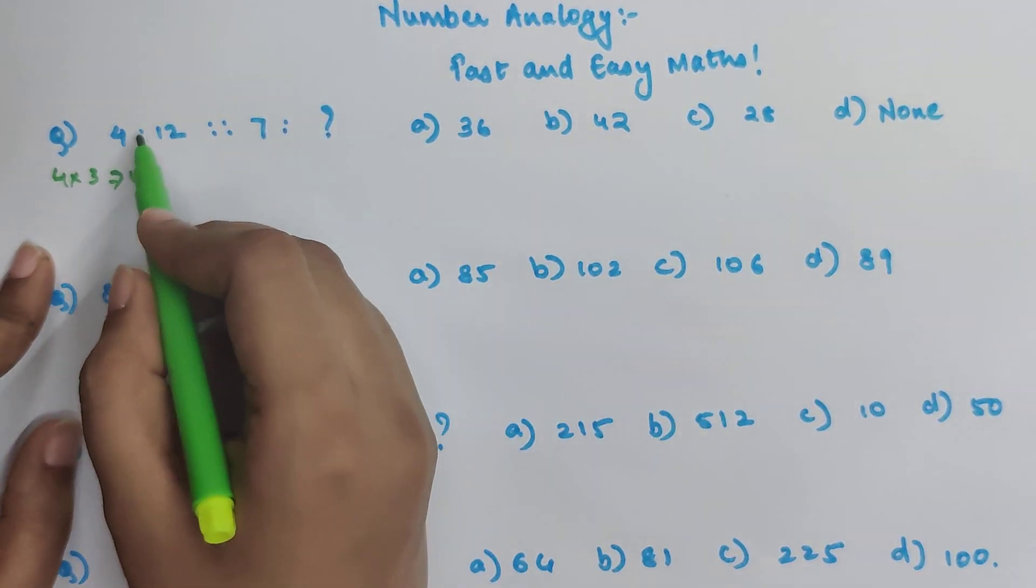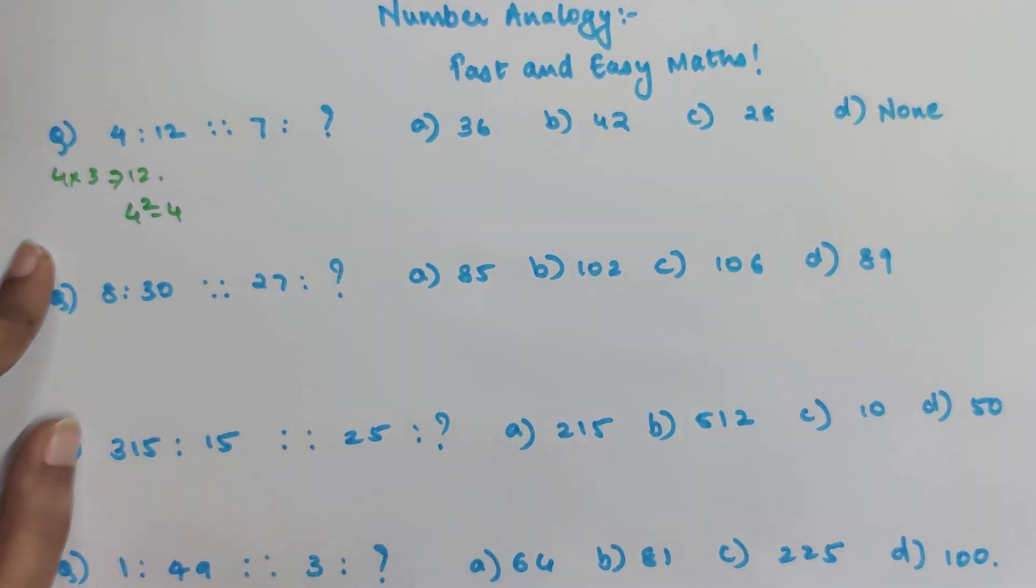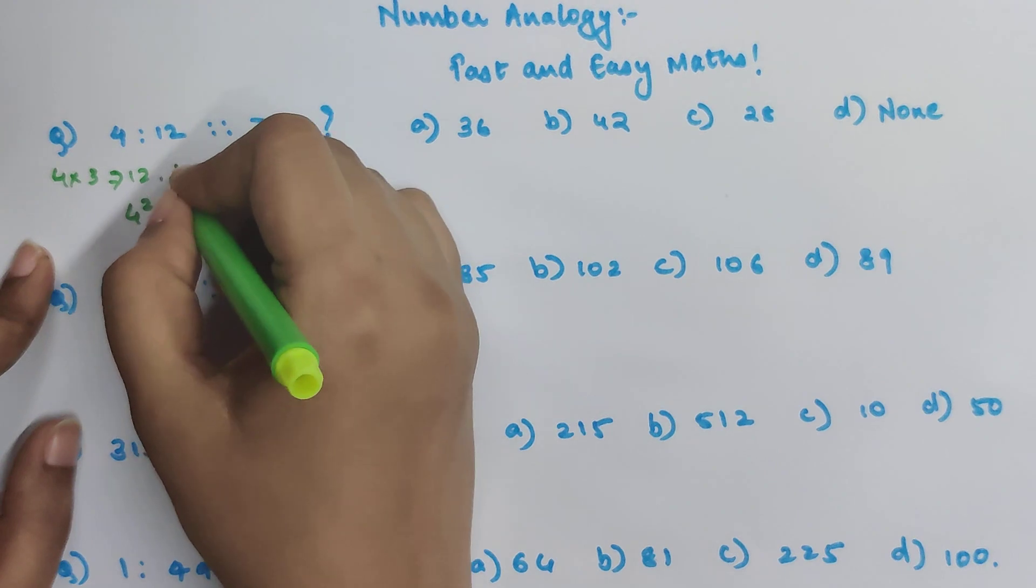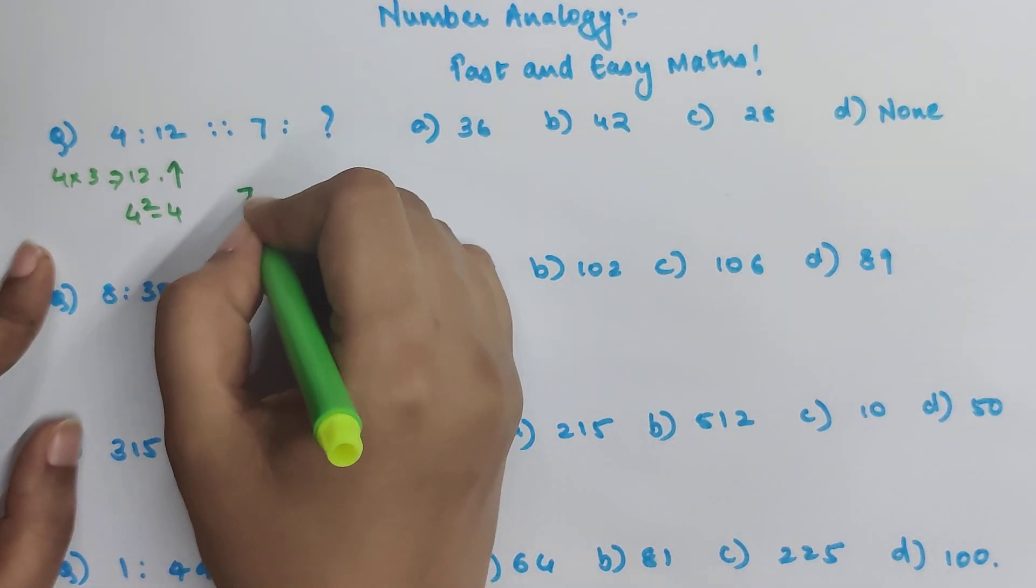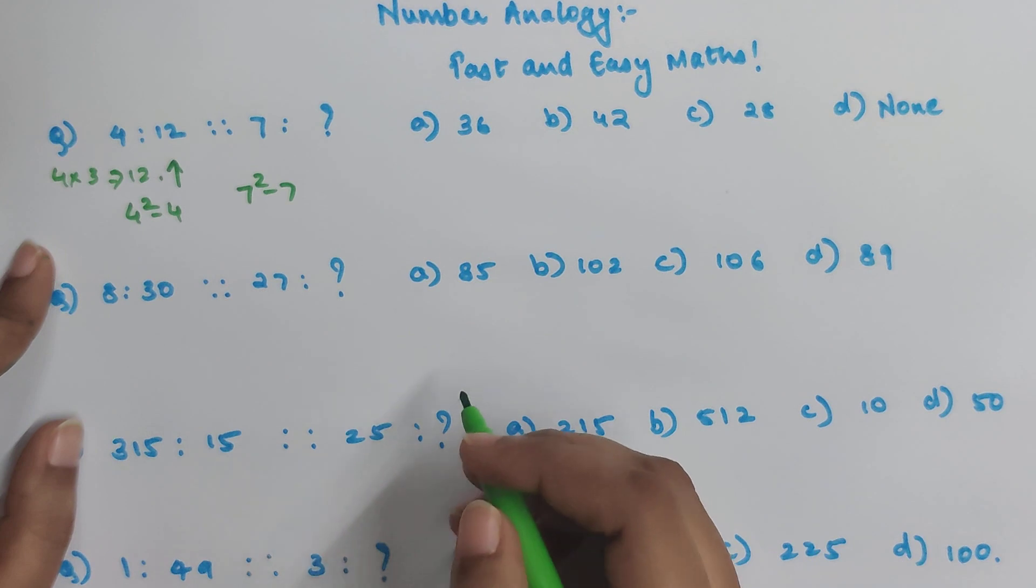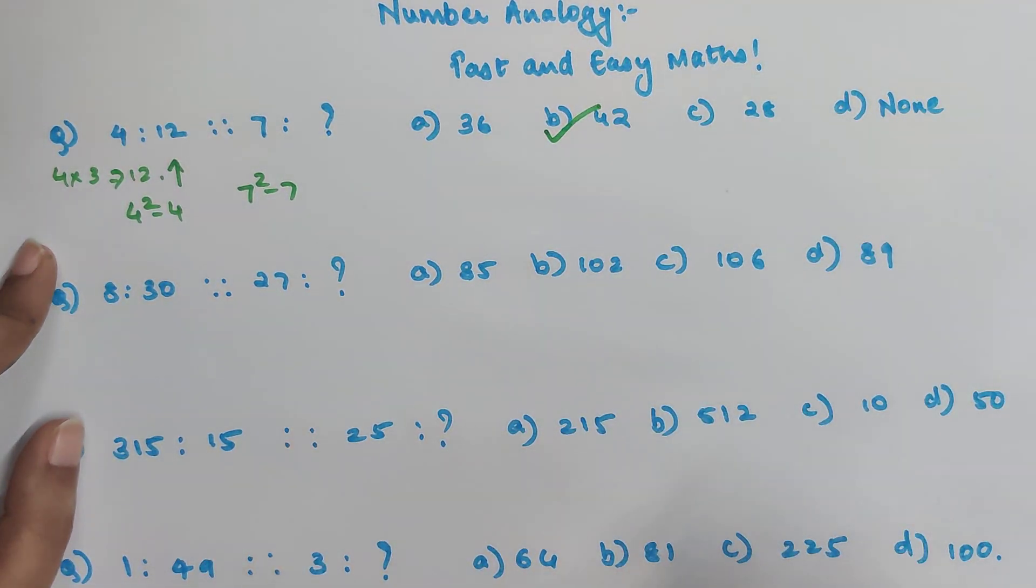So here I can say that 4 square minus 4 will get me what? 12, right? 16 minus 4 gets me 12, correct? So now 7 square minus 7. So 49 minus 7 is 42 and that is my answer.